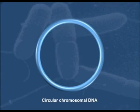The circular chromosomal DNA of bacteria must be compacted about 1,000-fold to fit within a bacterial cell.